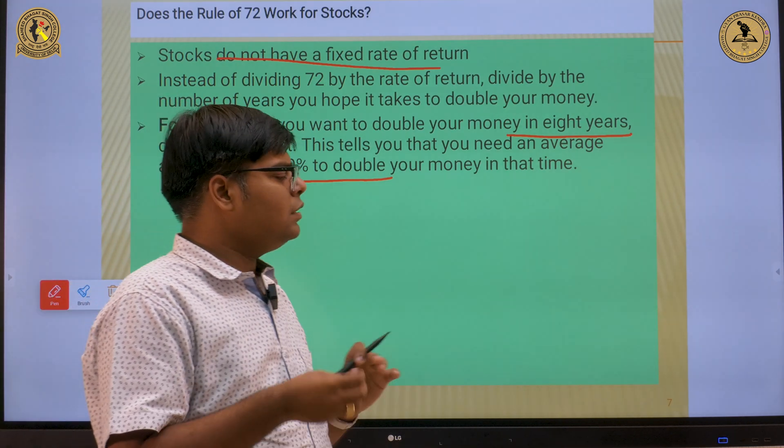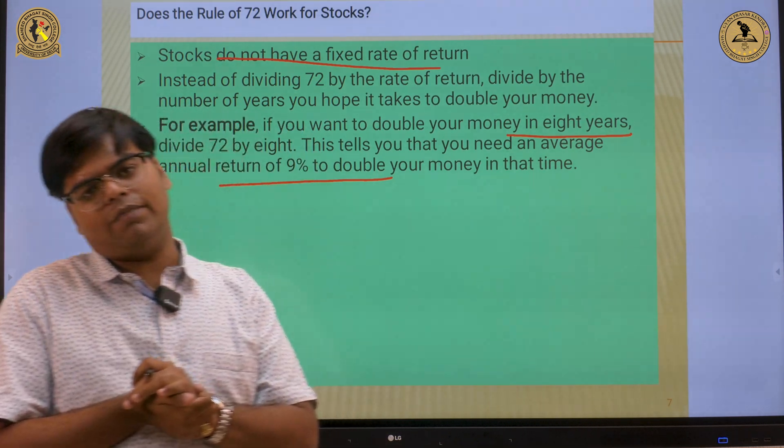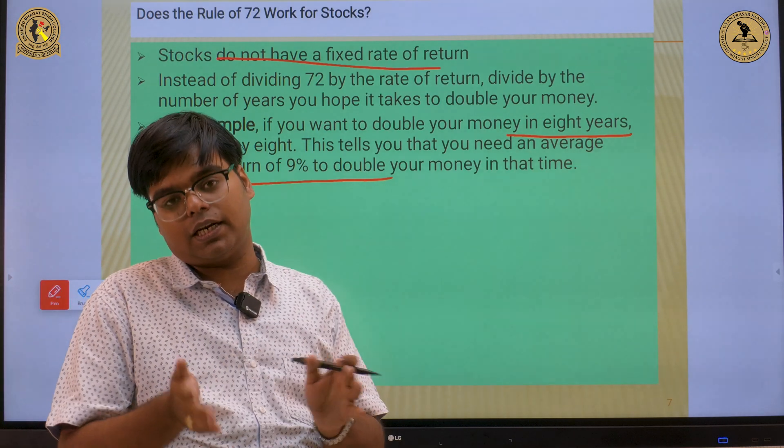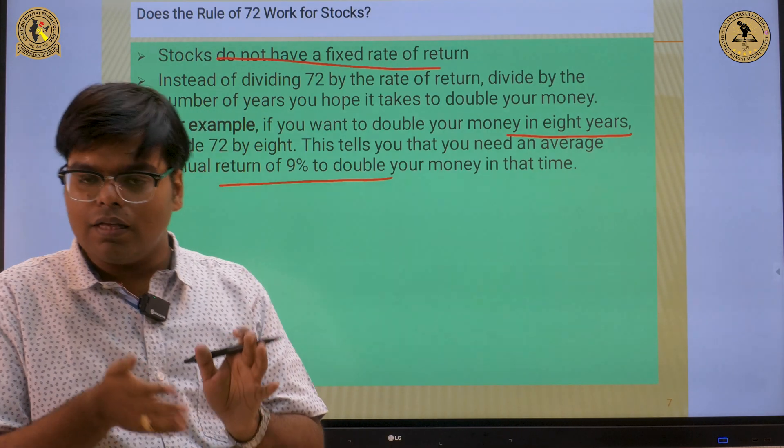Next issue is: can we apply the rule of 72 to almost macroeconomic data or to some data like inflation and all? The answer is yes.